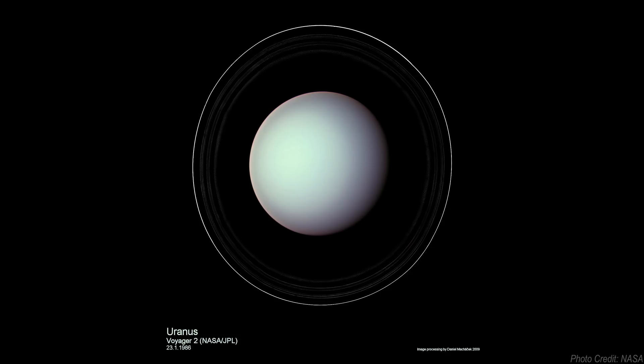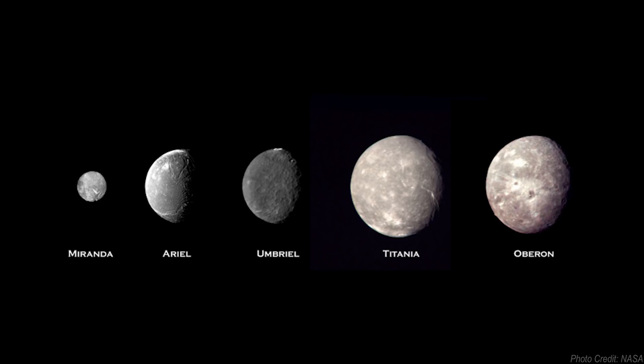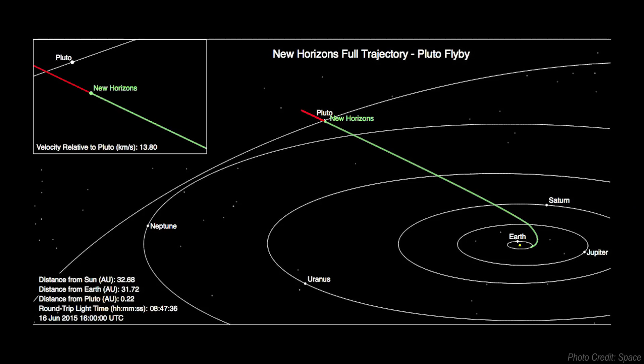In 1986, the Voyager 2 spacecraft flew by Uranus returning the first close-up images of the planet, its moons, and its rings. And in 2011, the New Horizons spacecraft passed Uranus on its way to Pluto, becoming the first spacecraft to journey beyond planet's orbit since Voyager 2.